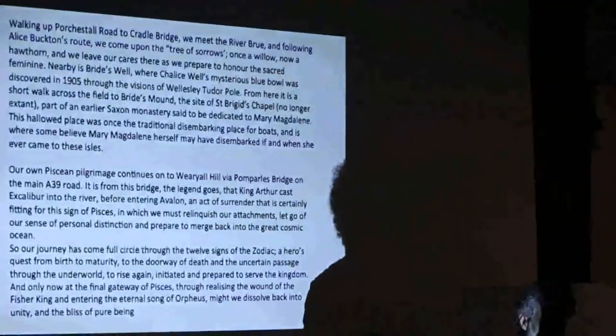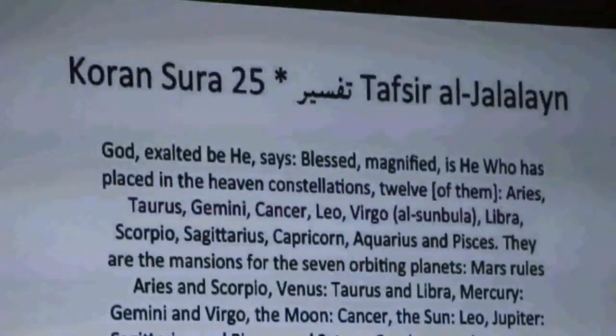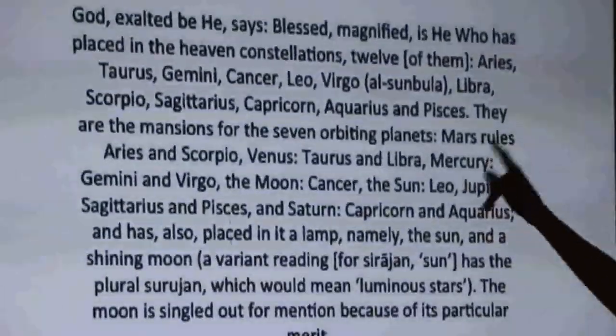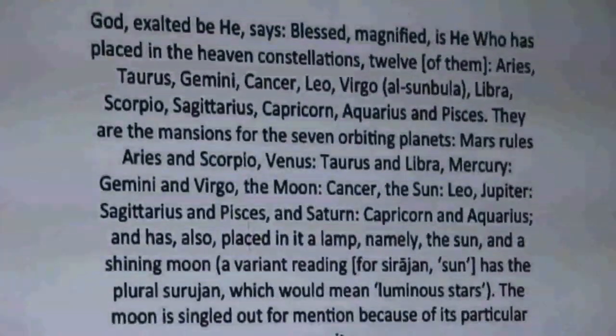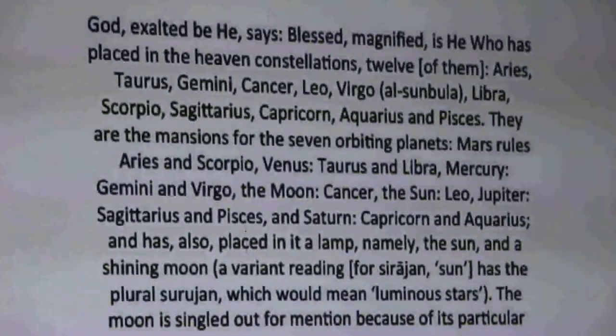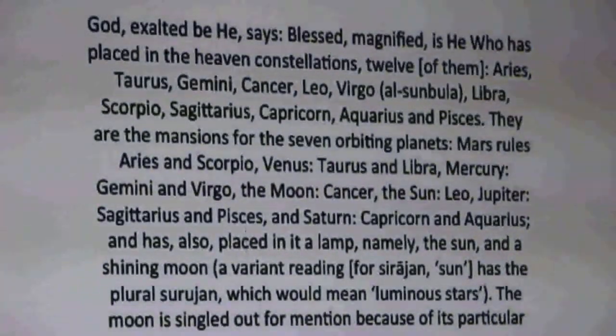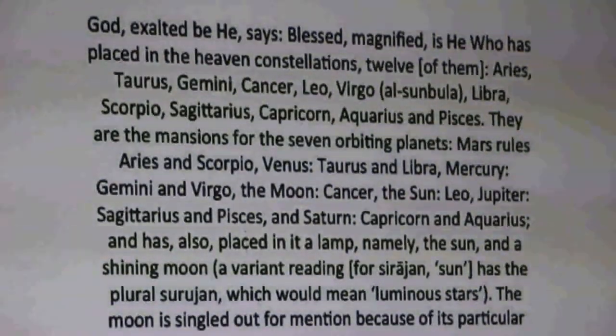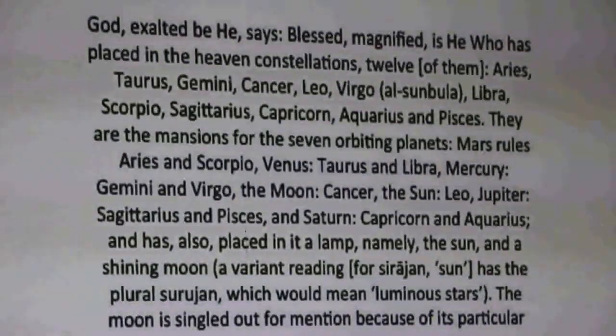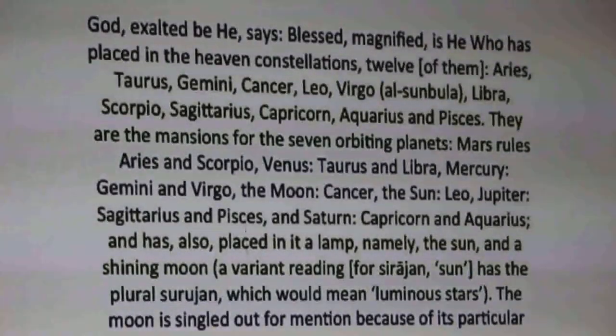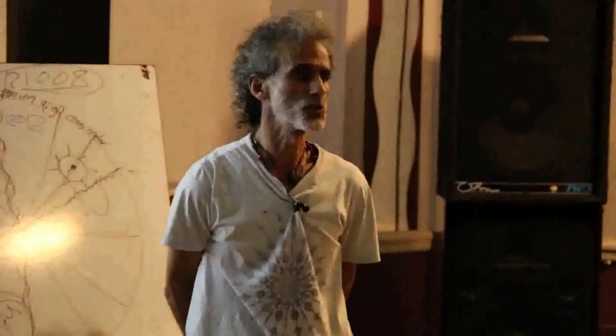So this science is everywhere. Well, would it be perhaps in the Bible? Yes. I've done many presentations uncovering this science of the twelve and the seven. The Quran? Well let's have a look at the Quran, shall we, and see if they know anything about the seven and the twelve. Here we have Quran, Surah 25. This is the website you can go to. This is one of their most famous Quran concordances. God, exalted be He, blessed, magnified is He who has placed in the heaven constellations, twelve of them: Aries, Taurus, Gemini, Cancer, Leo, Virgo, Al-Sambula, Libra, Scorpio, Sagittarius, Capricorn, Aquarius, and Pisces. They are the mansion for the seven orbiting planets. This is Quran, because Quran is nothing but science, friends. Science is religion. Religion is science. It's all syncretism. It's all one. All of them merge in the middle.